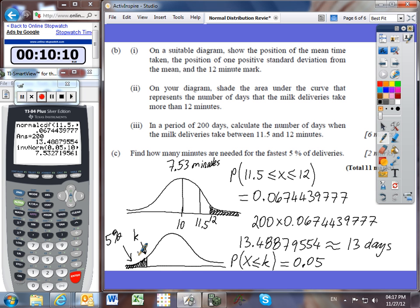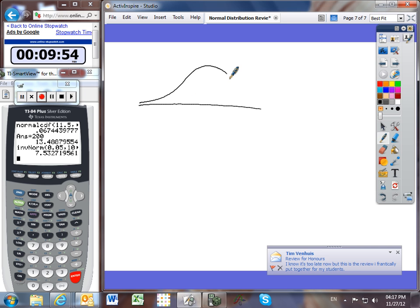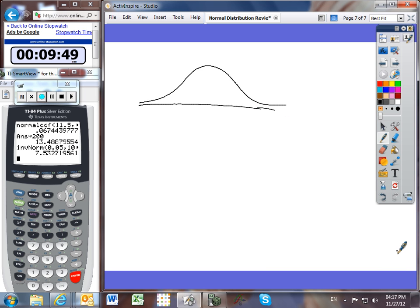Now, I'm just going to add that if it had asked, hypothetically speaking, for the slowest 20% of the deliveries, I want to quickly add another example to show you how to do that. If we had the slowest 20% of the deliveries, remember that this is 10. The slower deliveries take more time.